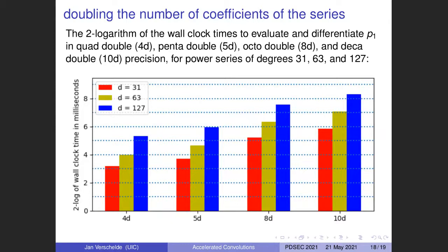Looking at the other scalability parameter — doubling the number of coefficients from 32 to 64 and doubling again — in tenfold precision, the logarithmic plot bars go up by a little over two units, which is very good since the algorithms have quadratic cost and we would expect a fourfold increase. Thanks to parallelism, we absorb one of the cost factors from working with power series, giving very good scalability.